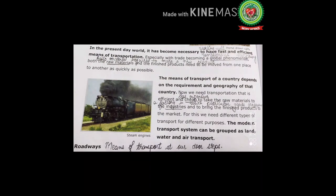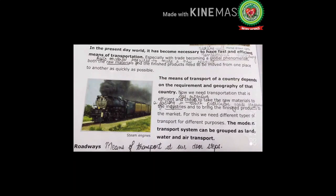In simple words, in hilly areas we have narrow tracks and in plain areas we have broad tracks so that trains can run efficiently. We need transportation that is efficient and cheap to take raw materials to industries and bring finished products to the market. For this we need different types of transport for different purposes. Write down: cheap means less expensive; industry means a factory in which particular goods are produced.